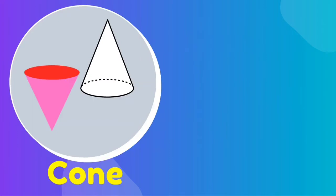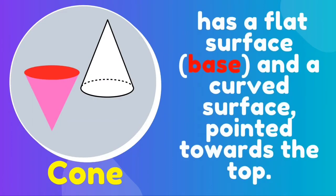Let's have first the cone. A cone has a flat surface, or what we call the base, and a curved surface pointed towards the top. It's like what you see in this picture.